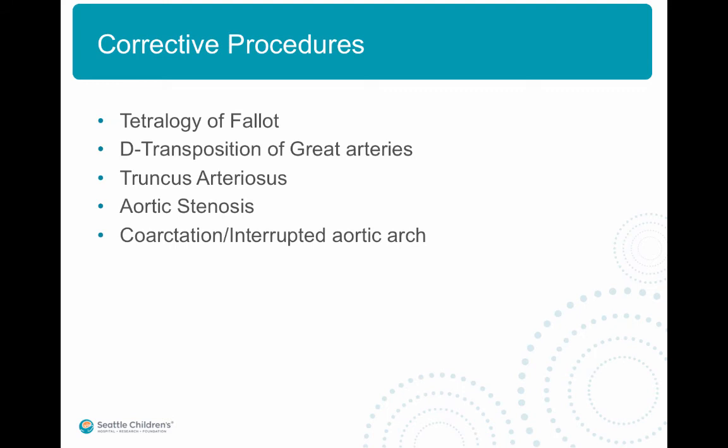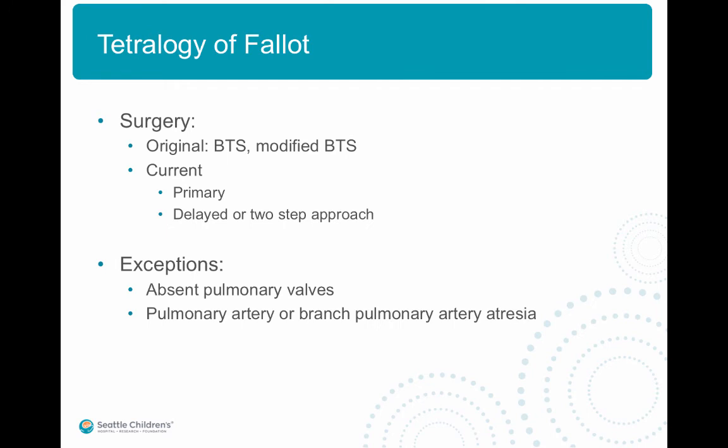The corrective procedures discussed are for tetralogy of Fallot, D-transposition of great arteries, truncus arteriosus, aortic stenosis, and coarctation. The original surgery for tetralogy of Fallot was a Blalock-Taussig shunt, but currently tetralogy of Fallot can be corrected either primarily as a single-step procedure or as a second-step procedure in which the VSD is closed and the right ventricular outflow tract obstruction is relieved.